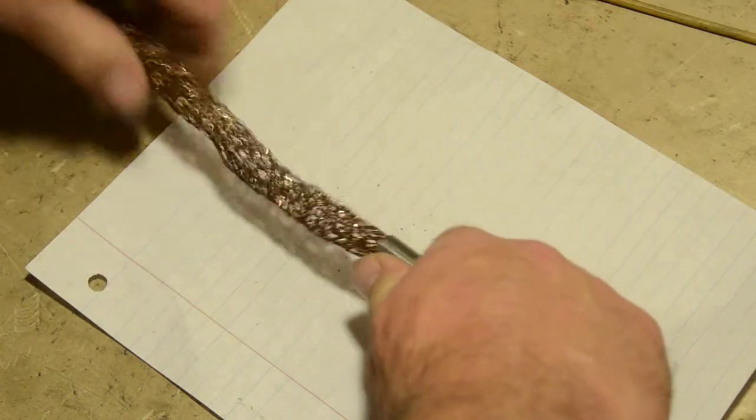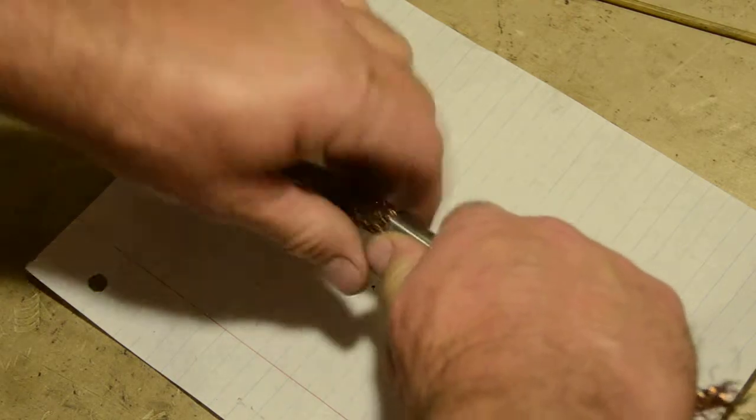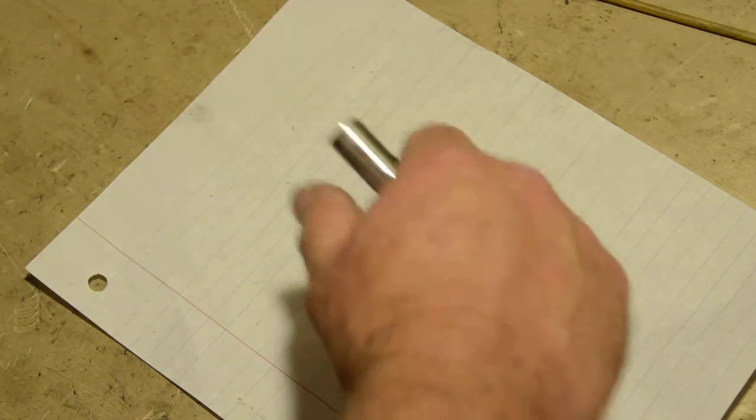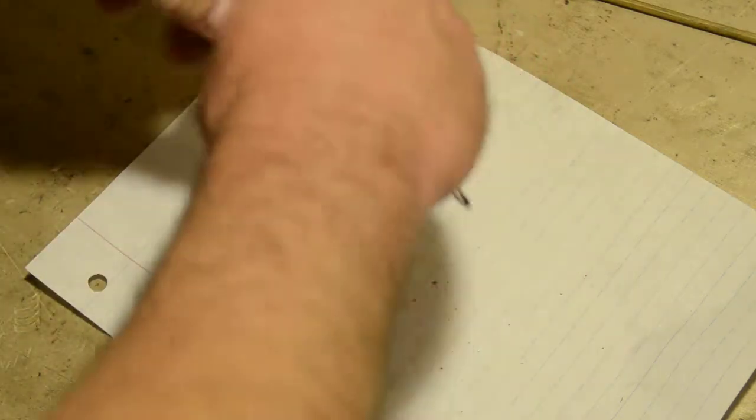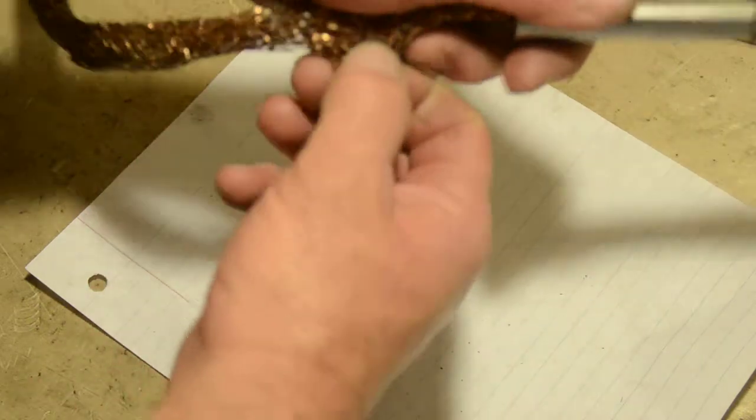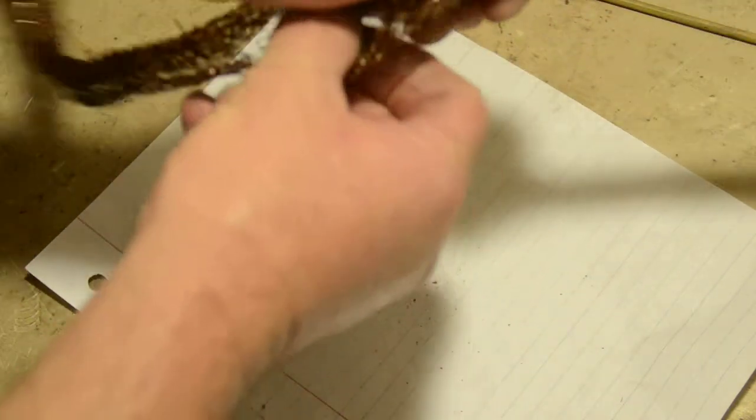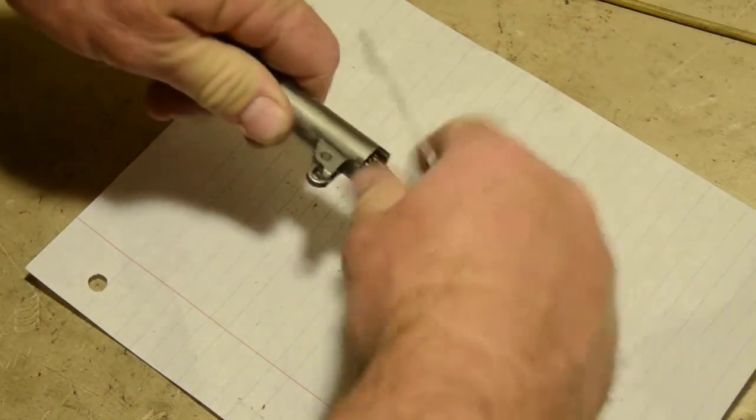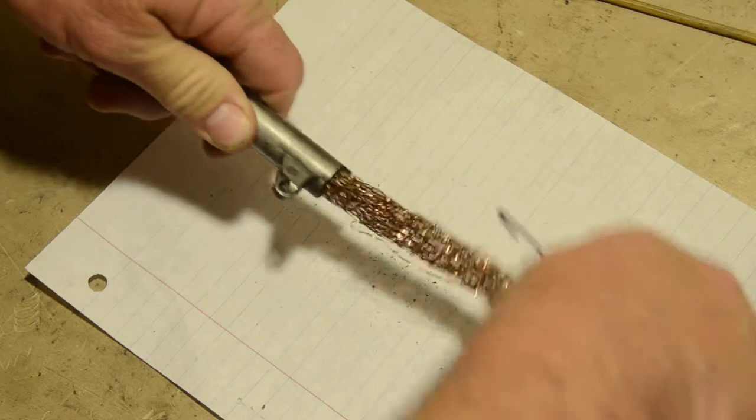This is a really quick and easy way to clean a pistol barrel. If it gets to where it runs through too loosely and doesn't drag as much stuff out, just fray it out. Just take it and pull it apart and kind of unravel it, and it'll pull through the barrel tighter. I've been using the same one for probably about six years.